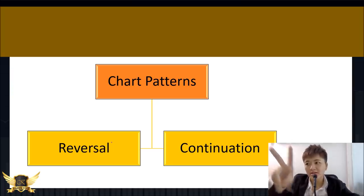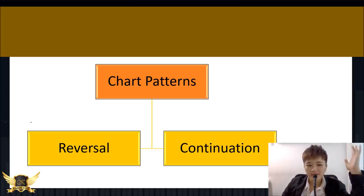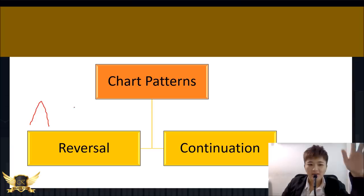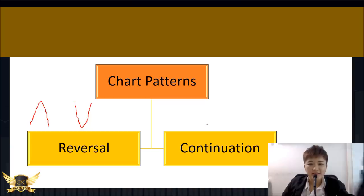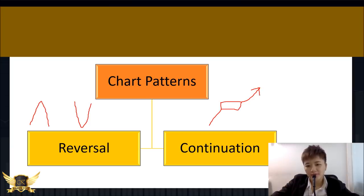When it comes to chart patterns there are two main types: reversal patterns and continuation patterns. A reversal pattern means the price is going to make a U-turn — if you're in an uptrend and see a reversal pattern, the price is going to turn down. A continuation pattern means the price is going to continue in its current direction, whether that's up or down.